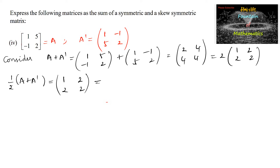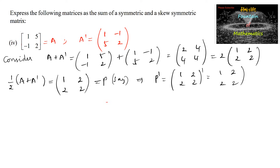Let this be matrix P. Then P transpose equals [1,2;2,2] transpose, which is again [1,2;2,2], equal to P. Hence this is a symmetric matrix.